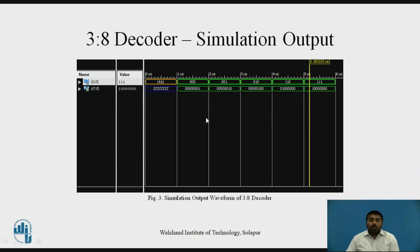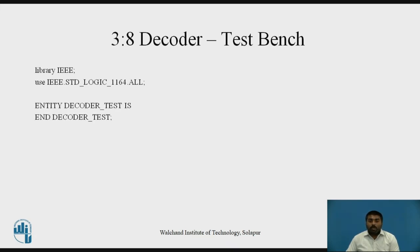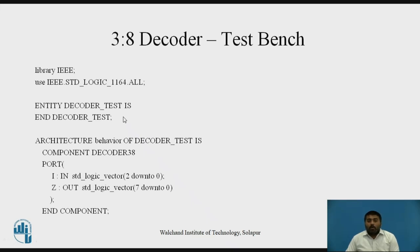Now for this 3-to-8 decoder, we are going to write the test bench. The test bench also has three parts: library declaration, entity part — but the entity is supposed to be empty, nothing to declare — and the third part is architecture. In the architecture, the design you are using is instantiated as a component. The component declaration has the same ports as the entity you created previously, but uses the 'component' keyword instead of 'entity'. You then end the component with 'end component'.